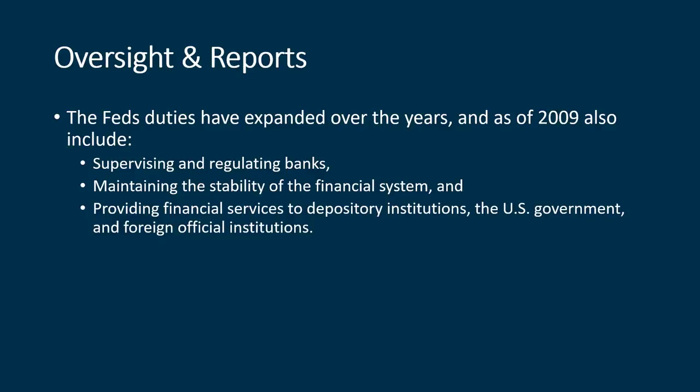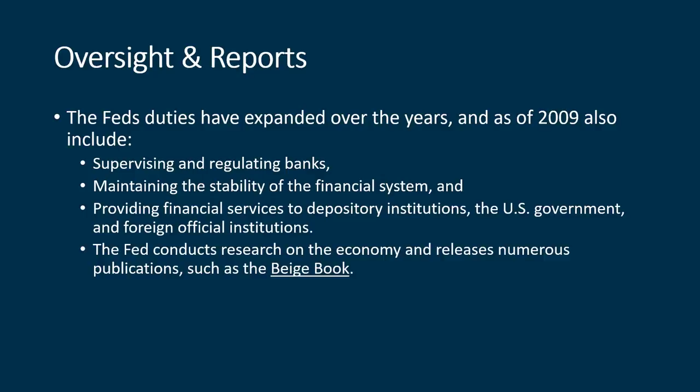The Fed also provides financial services to depository institutions, the U.S. government, and foreign official institutions. The U.S. has institutions spread throughout the whole world, and it's the Fed's job to oversee those different banks within other countries. The Fed also conducts research on the economy and releases numerous publications such as the Beige Book — a very inventive name because beige is the color of the cover. It's released once a month, about an hour before the market closes, and while markets rarely pay close attention, some people dive into it to interpret what's really going on.